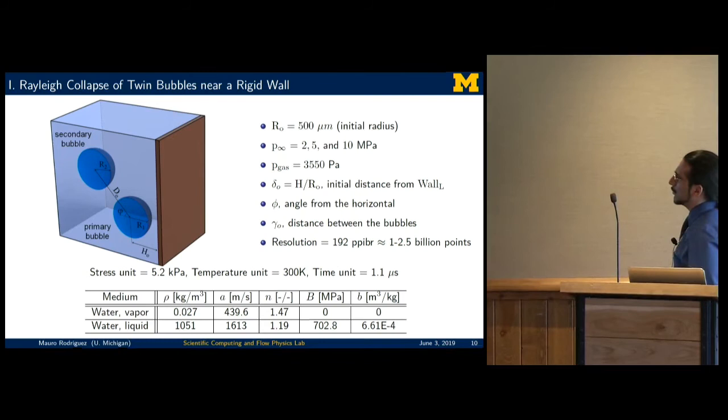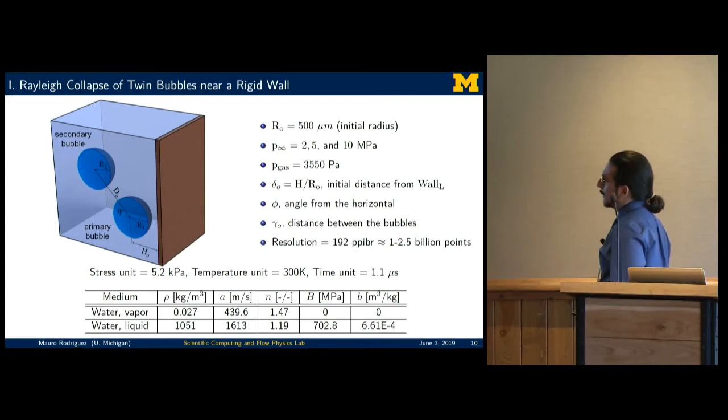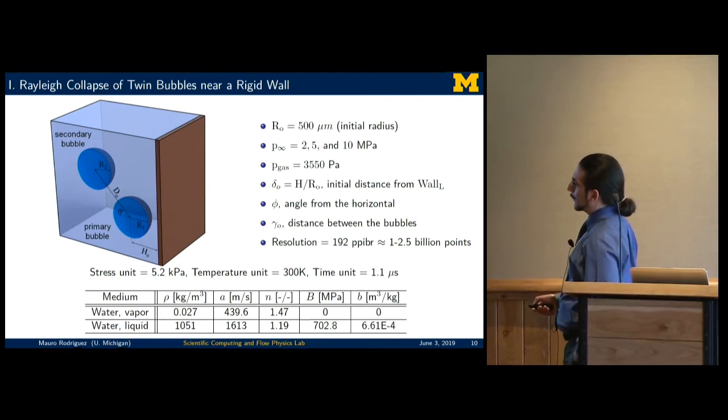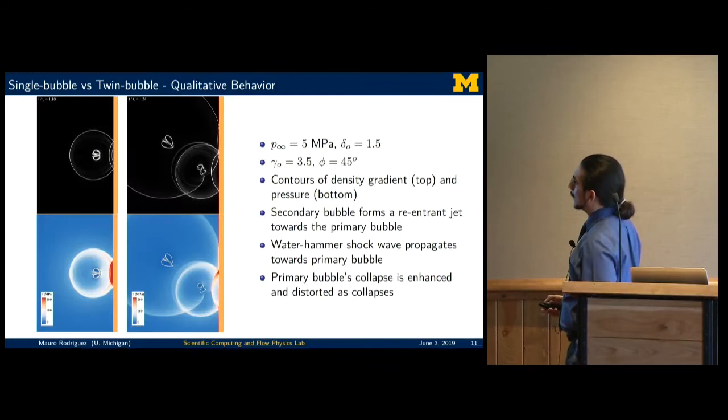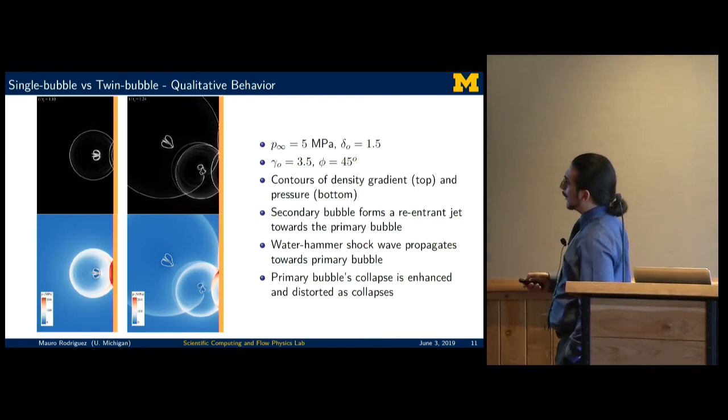I'll show you the twin bubble interactions near a rigid wall. I have the following setup: I have these two bubbles, a secondary and a primary bubble. The primary bubble is located at a position H_0 or if you normalize this as δ_0 from the wall, and they're separated by a distance D_0. If you normalize it, you get γ_0. When I say they're twin bubbles, they both have the same initial radius. The simulations here range from 1 to 2.5 billion points for all 13 variables that we need to resolve. The bubbles are composed of water vapor and the liquid surroundings.